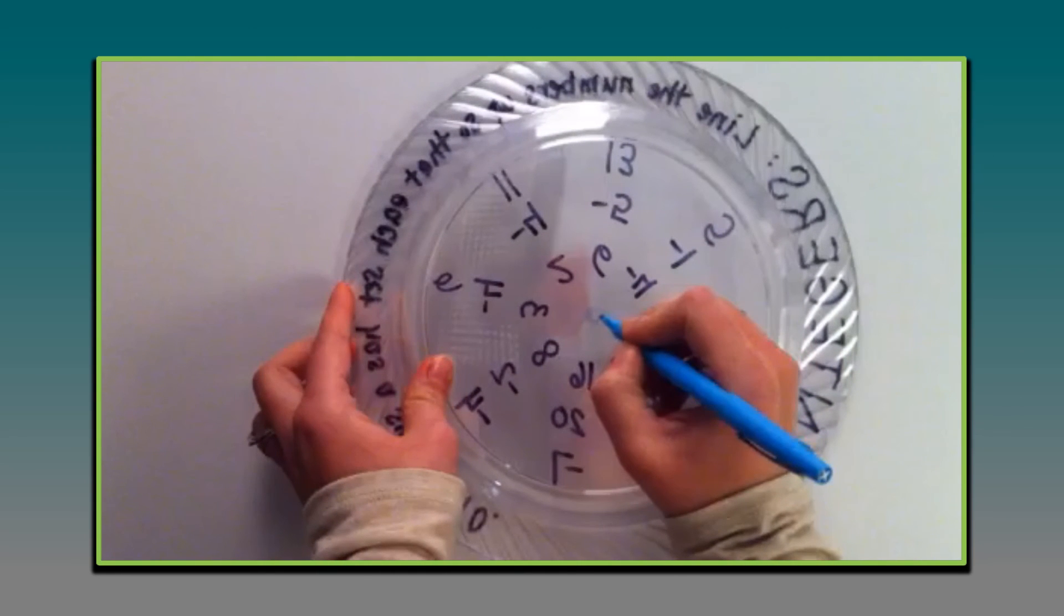I also learned it helps to mark a colored dot in the middle of the bottom of each set so that once you have multiple sets of these you can tell which three layers go together. Otherwise they get all mixed up.